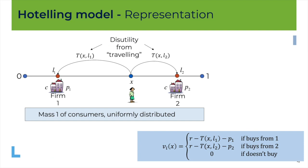Let us start by describing the model in a graphical way. Think of the market being described by this line from 0 to 1, which you can see as a street or as the dimension of some product. I will give you an example in a minute. On this street you've got both consumers and two firms who have to decide where to locate. Consumers are uniformly distributed along this line — at each point of the line you would have the same share of consumers. We make the assumption without any loss of generality that the total number of consumers is equal to 1.